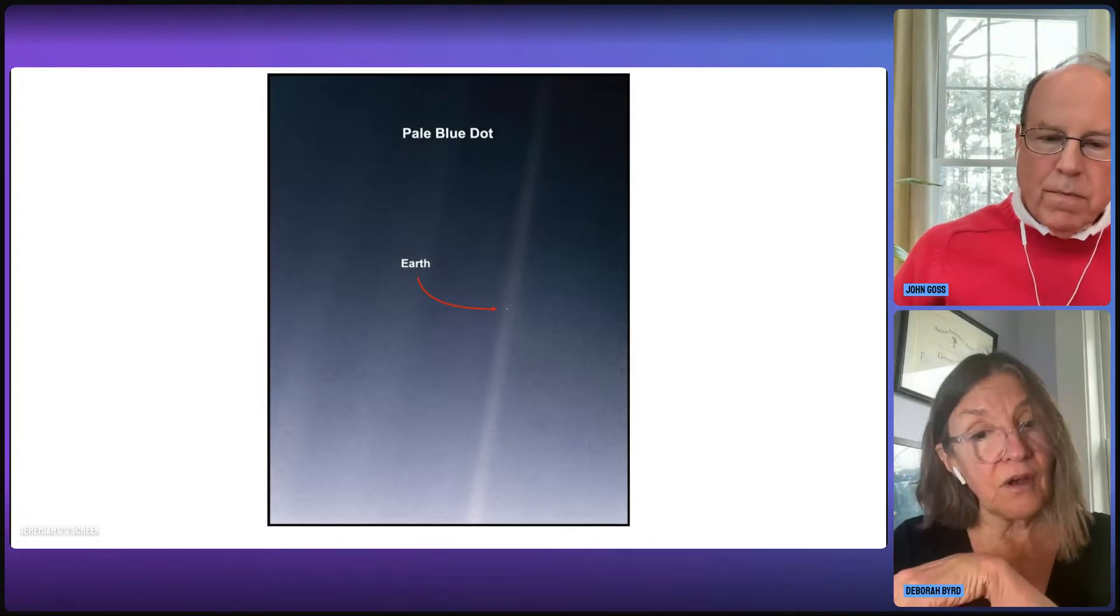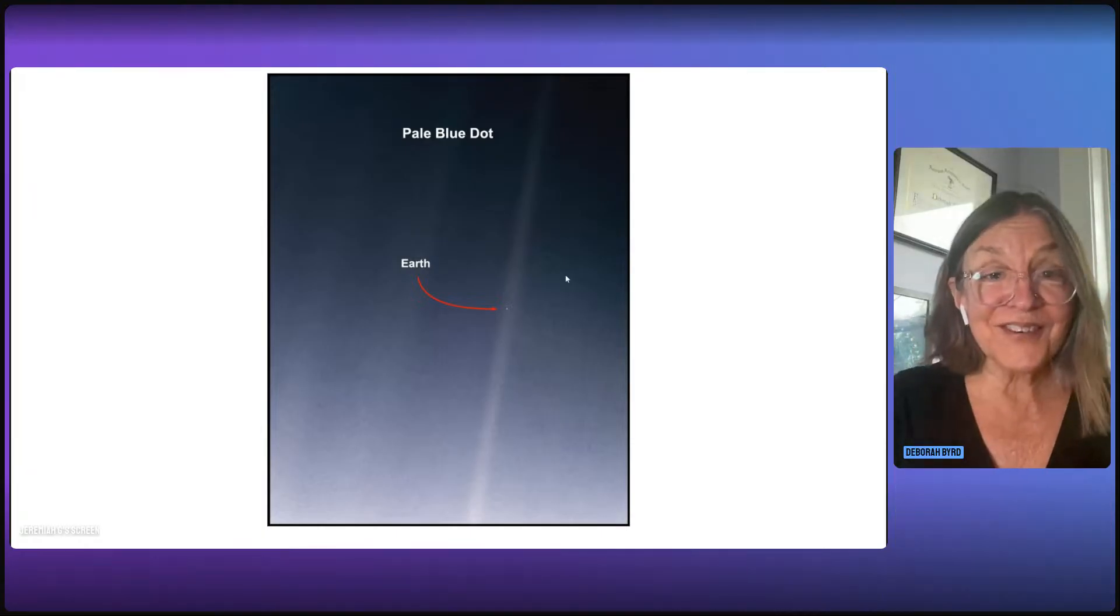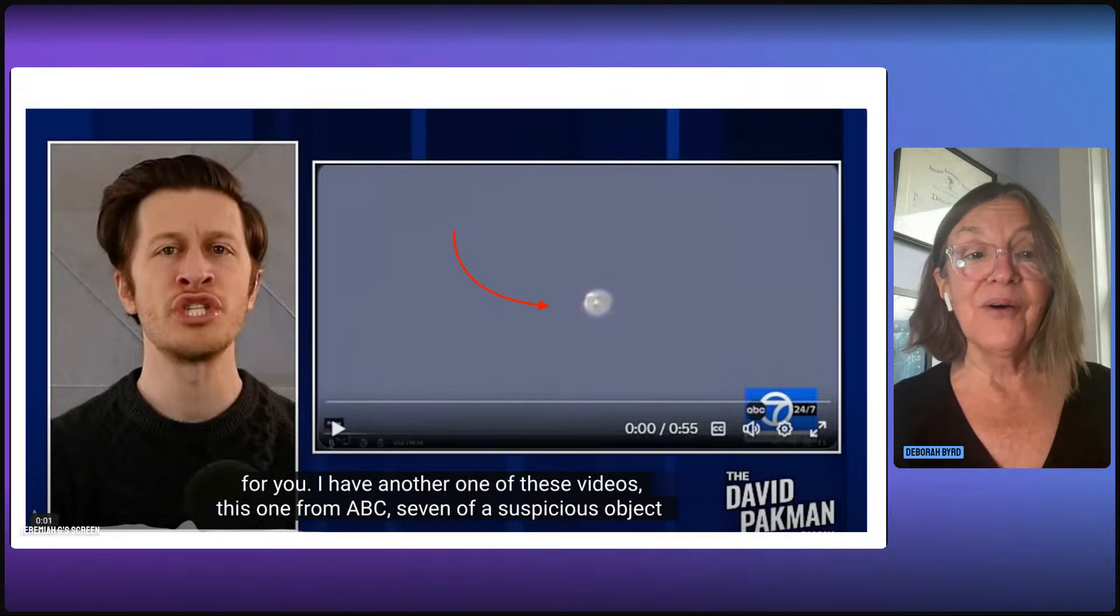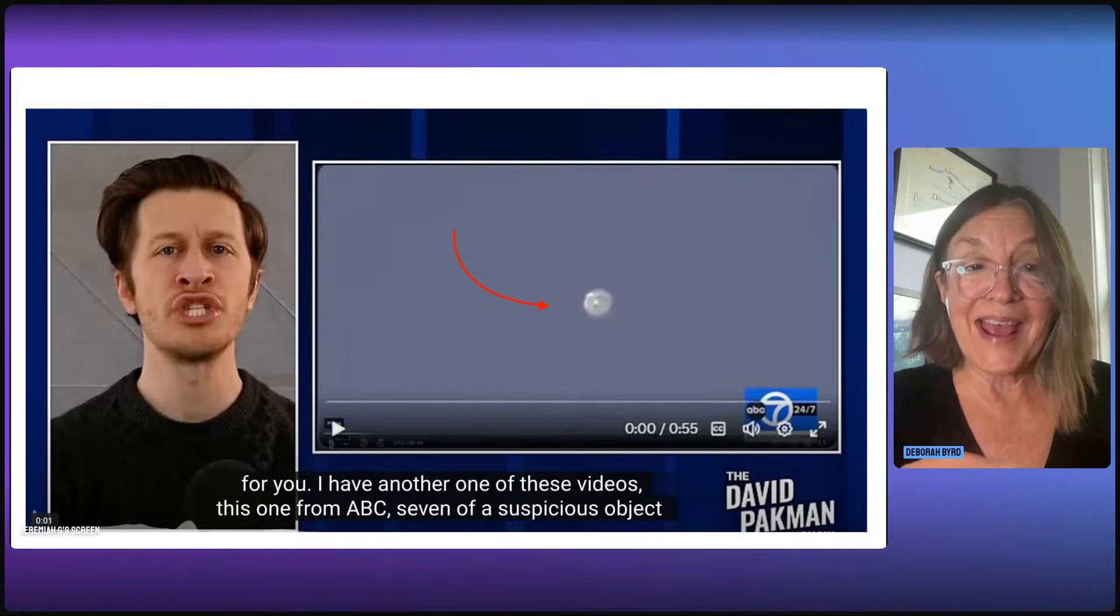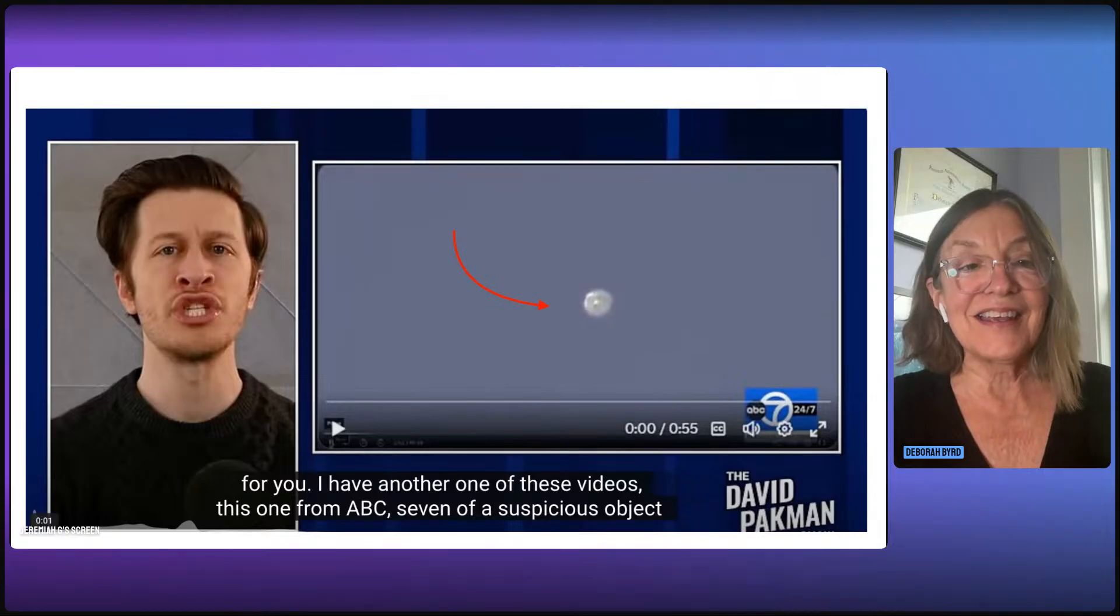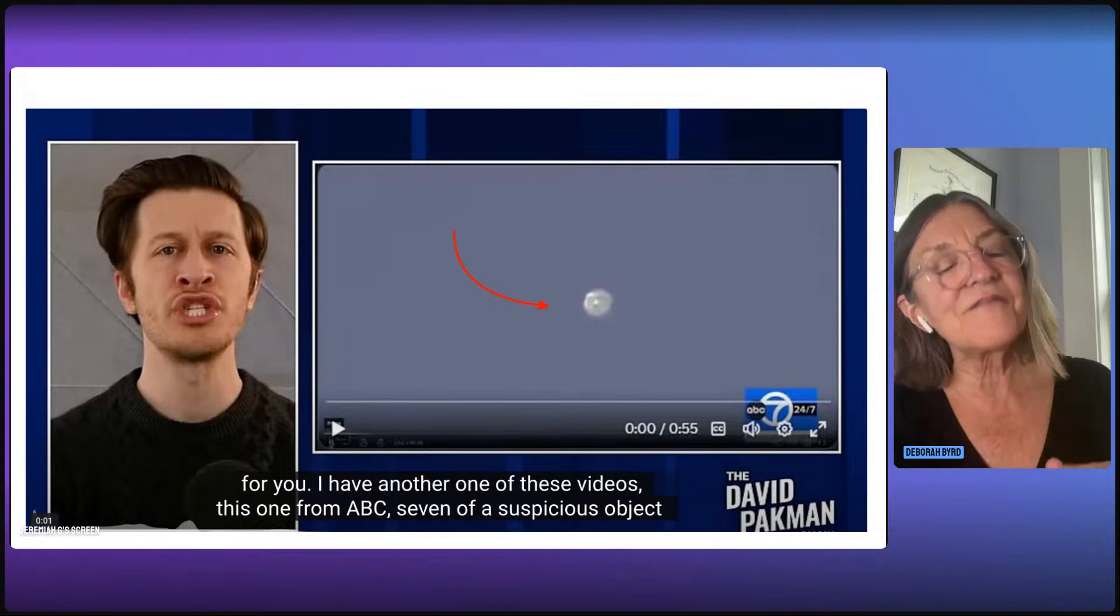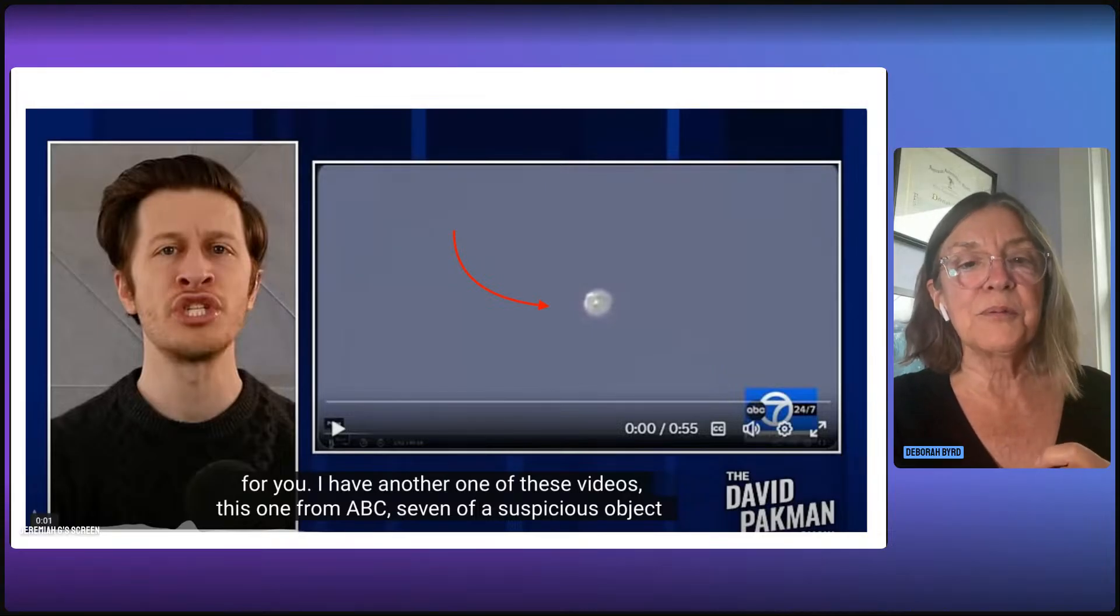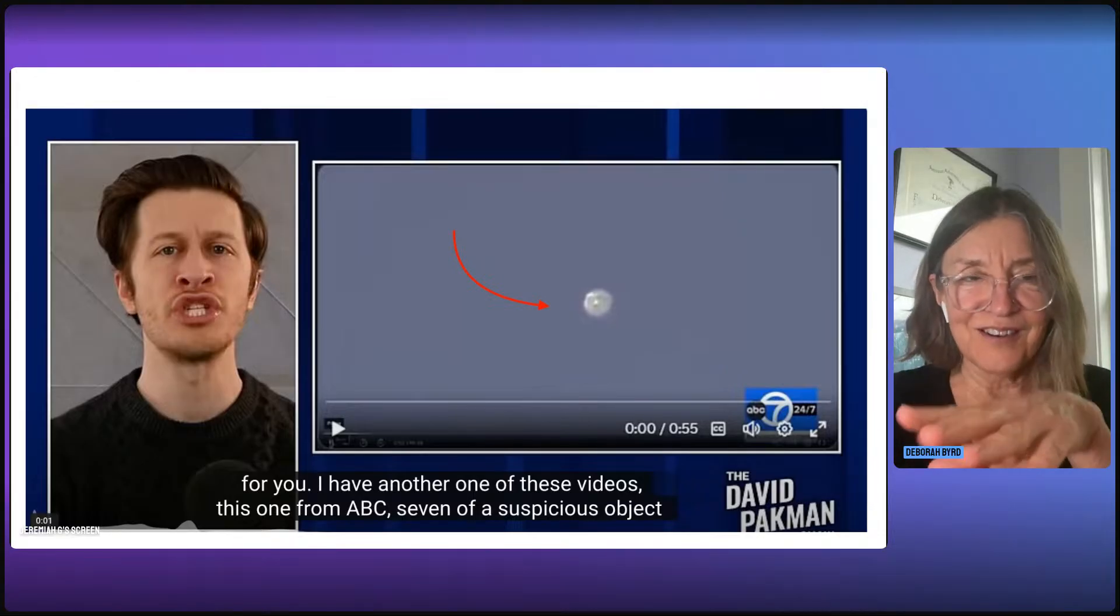You're welcome. So Voyager 1 saw Earth as a dot. And if you look with your eye alone, you'll see Venus as a dot in your western sky after sunset. And I've got to tell you, it's bright. And it's been bright and very noticeable for at least a month now. So this is a screenshot from somebody I follow here on YouTube, David Pakman. And this was from about a month ago. And he was reporting on an ABC affiliate in New York that was warning people about a possibly dangerous object in the evening sky.